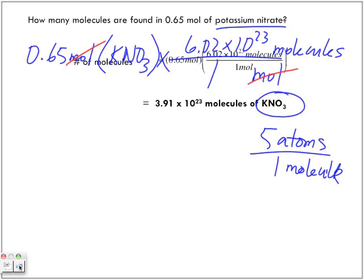But now, what are the least number of significant digits in my question? 2, right. So I need the 3.9. We look at the 1 after it, does it change? No. So the answer is 3.9 times 10 to the power of 23 molecules of KNO3.